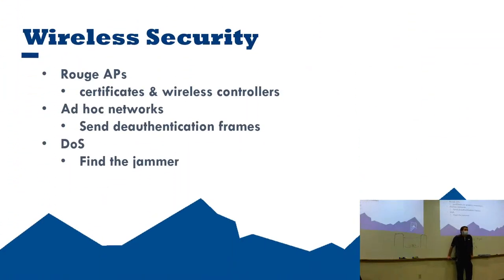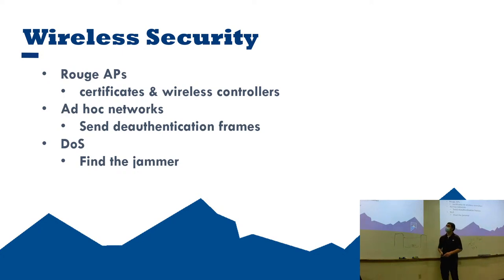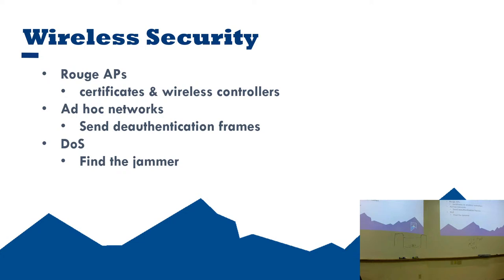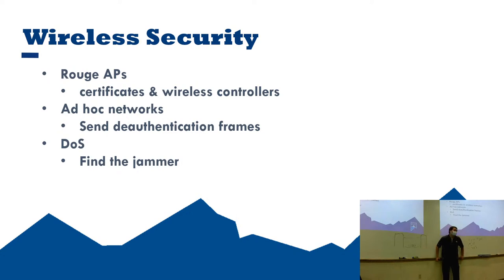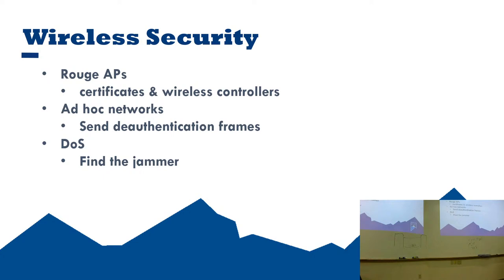A little about wireless security — covered in more detail next class. A rogue access point is an access point on the network not controlled by network administration. The best way to prevent issues: use certificates for your wireless network. Without a certificate, the only way a network is verified is by the SSID. If the certificate doesn't match, don't connect. Wireless controllers can also detect rogue APs and show you where they are, at which point you remove the unauthorized device.